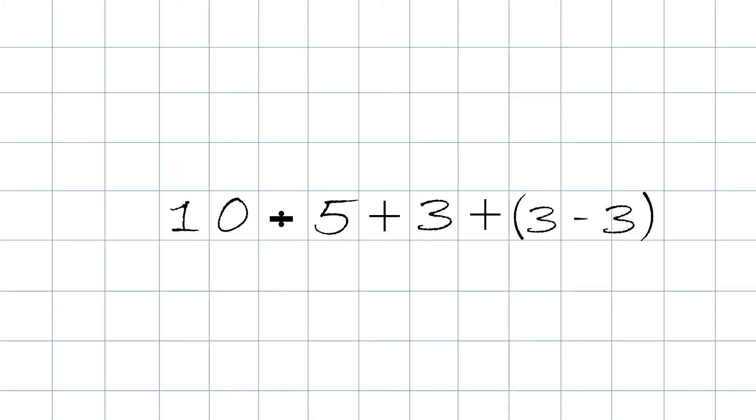Let's do another one. 10 divided by 5 plus 3 plus 3 minus 3 in the parentheses. Step number 1 is we do the parentheses. 3 minus 3 will be 0.